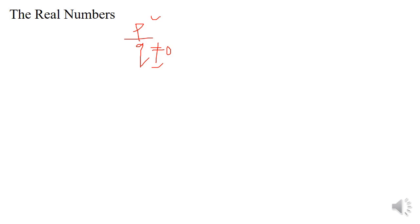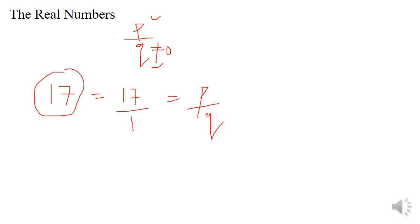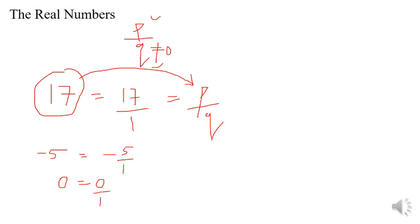If we take any natural number, say 17, we can write 17 as 17 by 1, which is of the form P by Q — a rational number. So every natural number can be converted to a rational number by simply putting 'by 1.' Similarly, minus 5 is an integer; we write it as minus 5 by 1, which is of the form P by Q where P is minus 5 and Q is 1 — a rational number. Likewise, 0 can be written as 0 by 1. So every integer is a rational number.